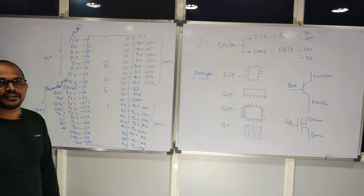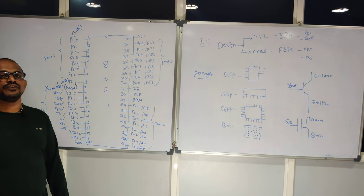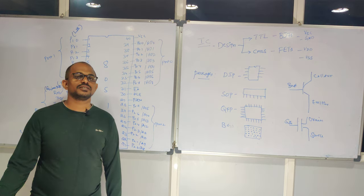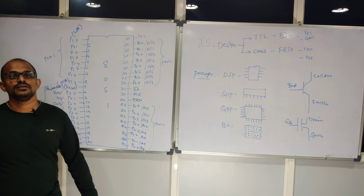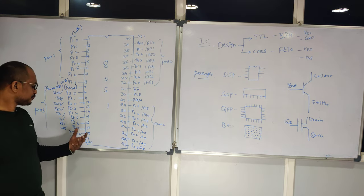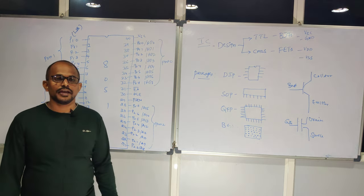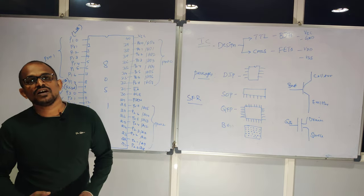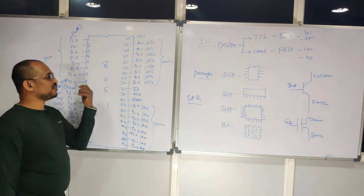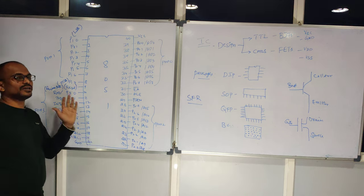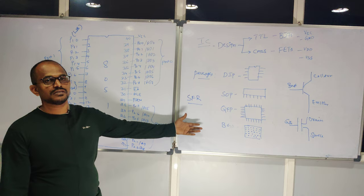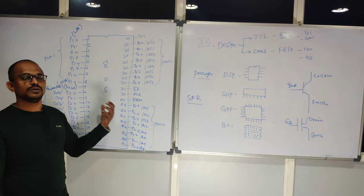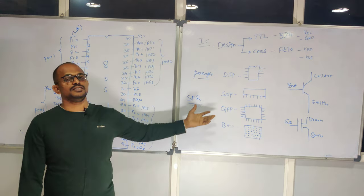P3.6 and P3.7 are dedicated for read and write operations with external memory. Some manufacturers provide limited ROM — only 4K or 8K — and if that memory is insufficient, you need external memory interfacing, where these two pins come into play. Alternate functionalities are selected by SFRs — special function registers — from the microcontroller. SFRs decide the functionality of these pins: whether used for I/O or alternate functionality. By default, these pins are used for I/O, but for alternate functionality you need to program the SFR registers.